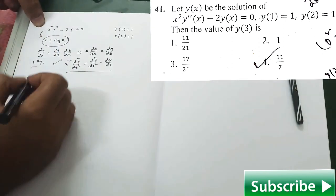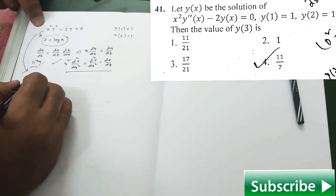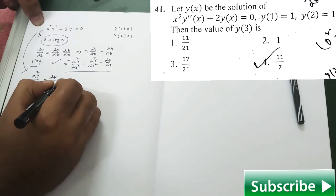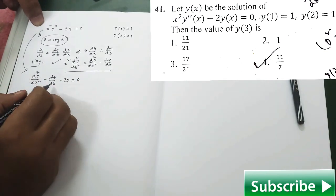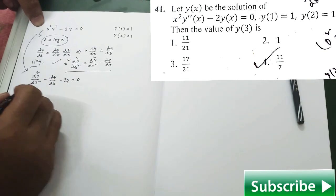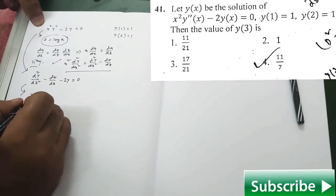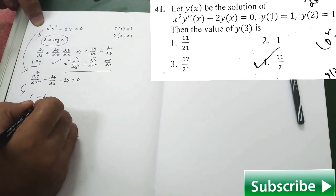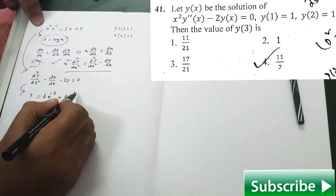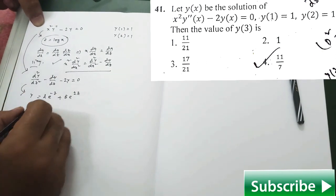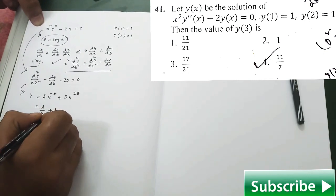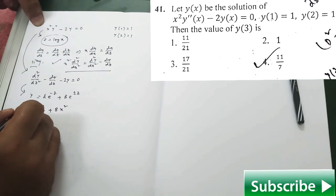Using this substitution, the equation transforms into a second order linear ODE with constant coefficients, which is easily solvable. You obtain y equal to A·e^(−z) + B·e^(2z). Since z is log(x), substituting back gives y equal to A/x + B·x², which is your general solution.